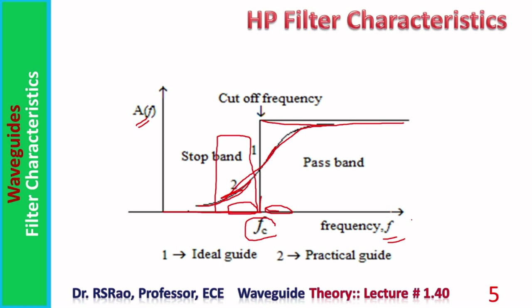The conclusion is that we should avoid using the waveguide at frequencies near to fc — whether slightly below or above. If frequencies are lesser than fc but near to it, attenuation is not infinity. If frequencies are higher than fc but near to it, they still attract some attenuation. Therefore, it is better to use frequencies somewhat farther away from fc, where the practical waveguide characteristic is closer to the ideal.